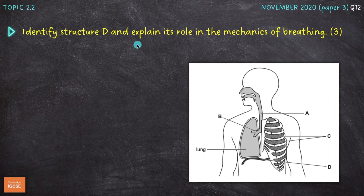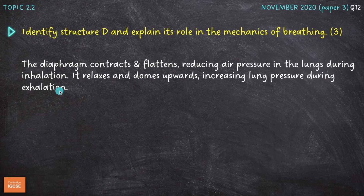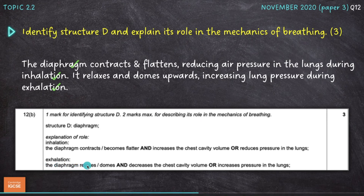Next question: identify structure D and explain its role in the mechanics of breathing. Structure D is the diaphragm, worth one mark. The diaphragm contracts and flattens or moves downwards, reducing air pressure in the lungs during inhalation. It relaxes and domes upwards, increasing lung pressure during exhalation. The mark scheme awards one mark for identifying the diaphragm, then two marks for its role: during inhalation it contracts and becomes flatter, increasing chest cavity volume or reducing pressure in the lungs; during exhalation it relaxes or domes upwards, decreasing chest cavity volume or increasing pressure in the lungs.